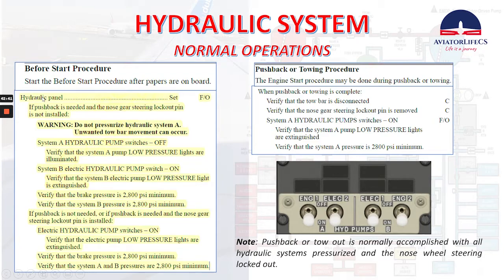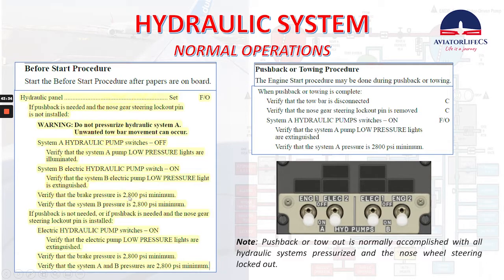It depends how we are going to do the pushback. If pushback is needed and the nose gear steering lockout pin is not installed — there is a warning: do not pressurize hydraulic system A, as unwanted tow bar movement can occur. System A hydraulic pump switches off. Verify that the system A pump low pressure lights are illuminated. System B electric hydraulic pump switch on. Verify that the system B electric pump low pressure light is extinguished. Verify that brake pressure is 2800 psi minimum and verify that system B pressure is 2800 psi minimum.